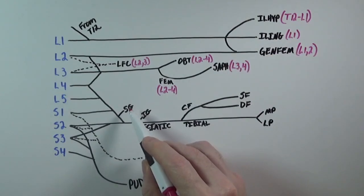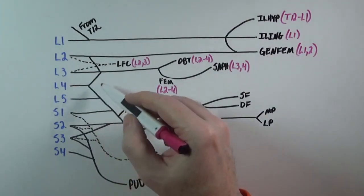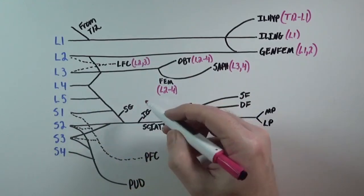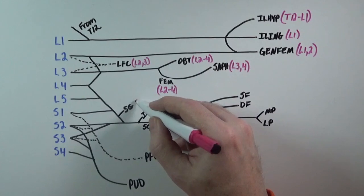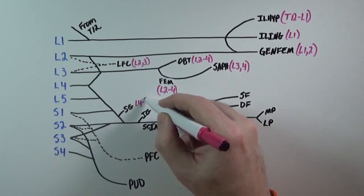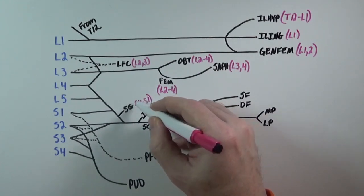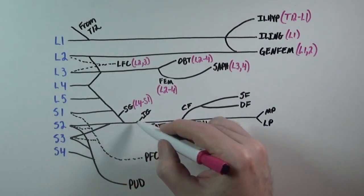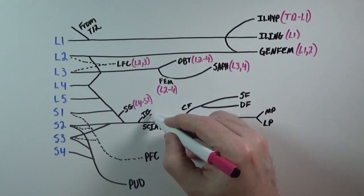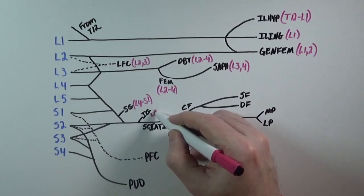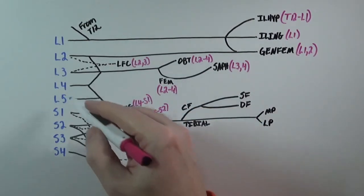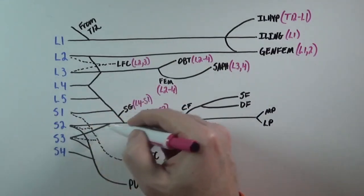Down here, the superior gluteal nerve, it comes from L4, L5, and S1. We draw the slopes to indicate the direction the fibers are running toward the nerve that they're creating. The inferior gluteal nerve will come from L5, S1, and S2. The sciatic nerve, on the other hand, comes from L4, L5, S1, S2, and S3.